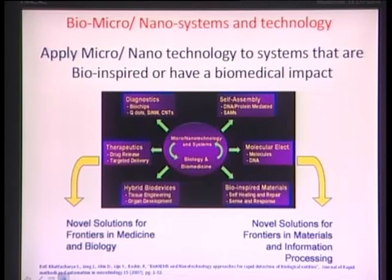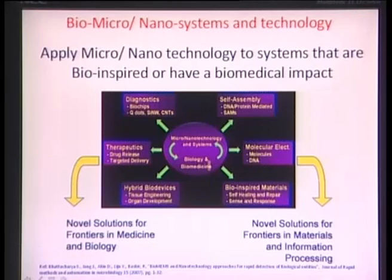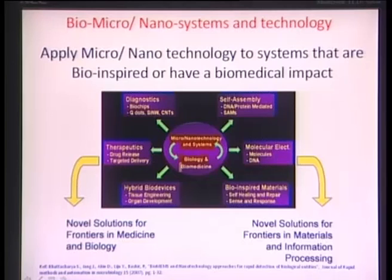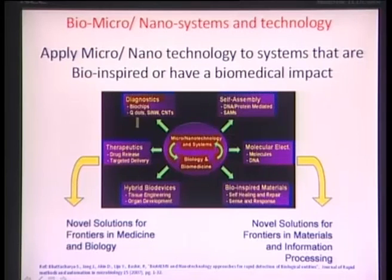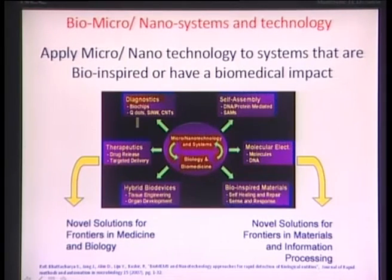These technologies or systems are bio-inspired in a sense that there is a to-and-fro learning between biology and this technique. This figure more clearly illustrates this idea: the circle in the center represents the two areas of micro-nano technology and systems and biology and biomedicine. The two arrows on both sides show what can be learned from what. Looking at the boxes on the left — diagnostics, biochips, quantum dots, silicon nanowires, carbon nanotubes — these are technologies we can apply to biology and biomedicine, learning from micro-nano technology and systems.